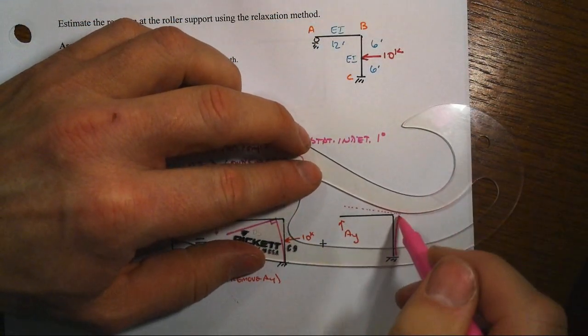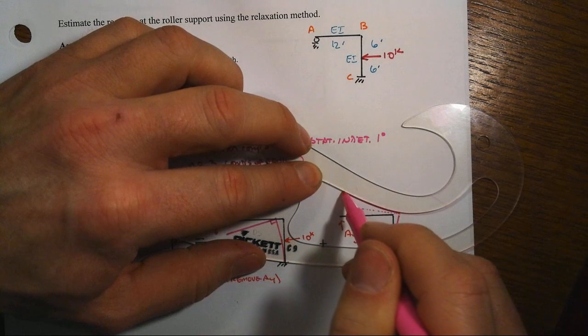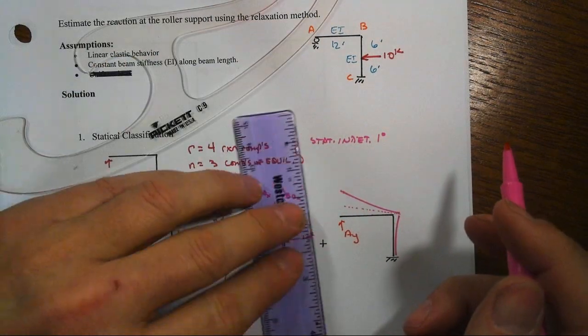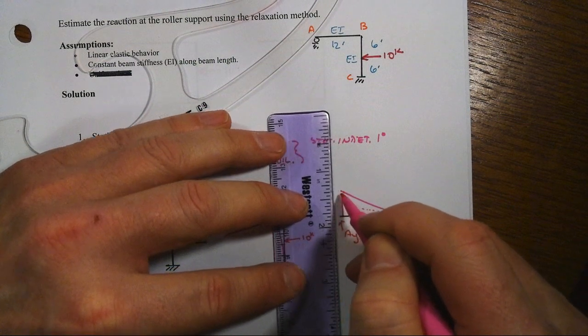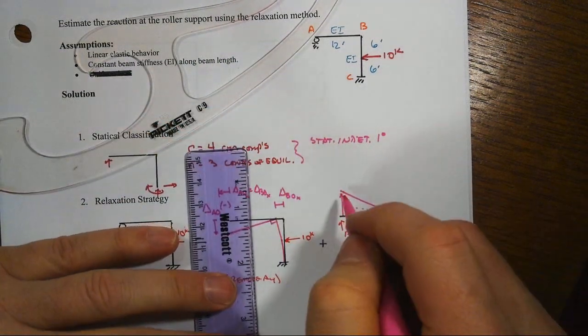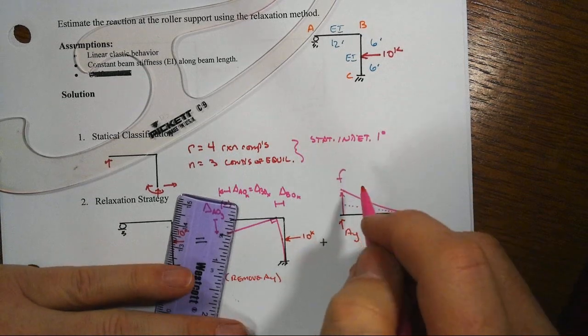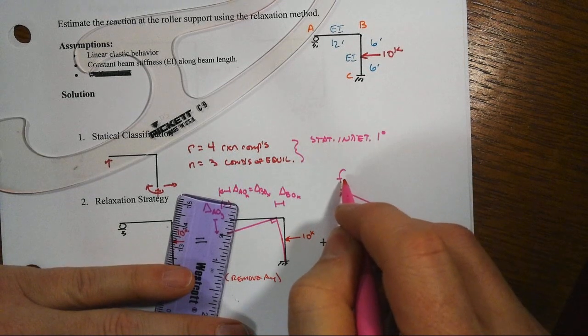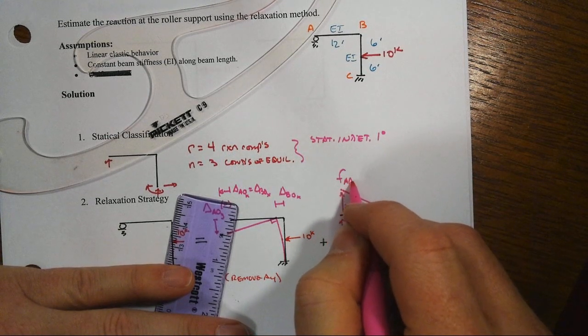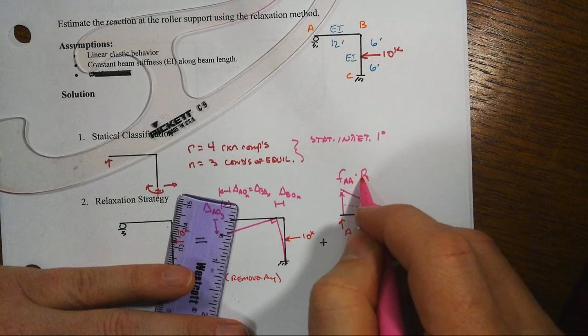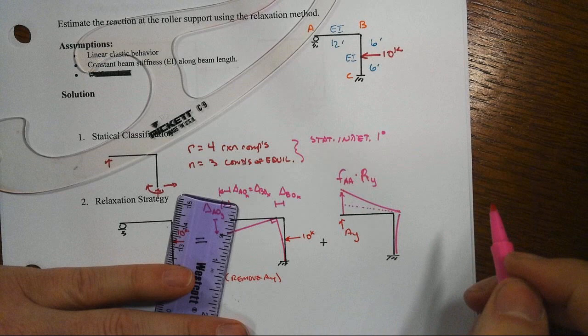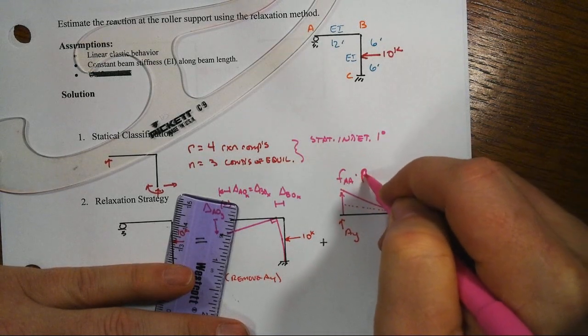And then we've got to get this little beam in there projecting its length to be the same as it was before. But there's going to be what we would say is the flexibility coefficient at A due to the unit load at A, of course times the actual reaction at A—that's supposed to be an Ay not a Ry.